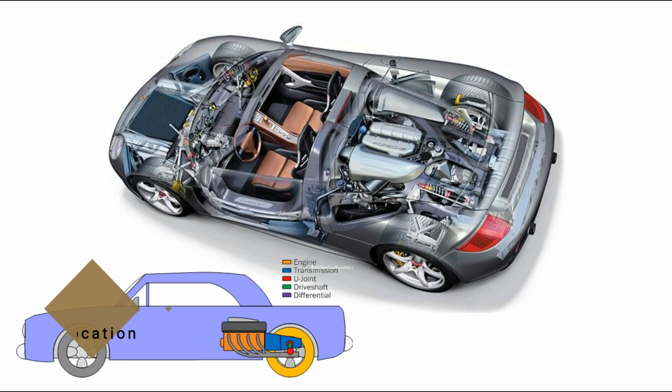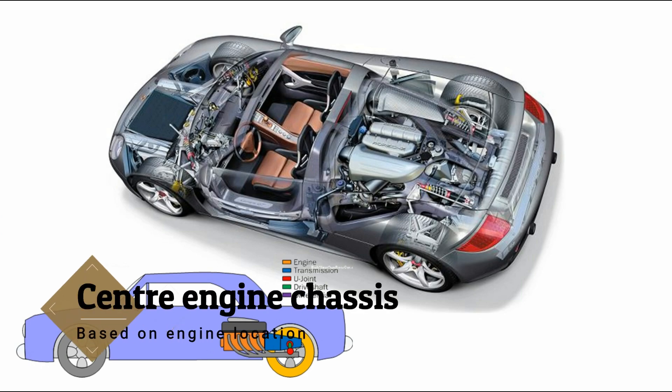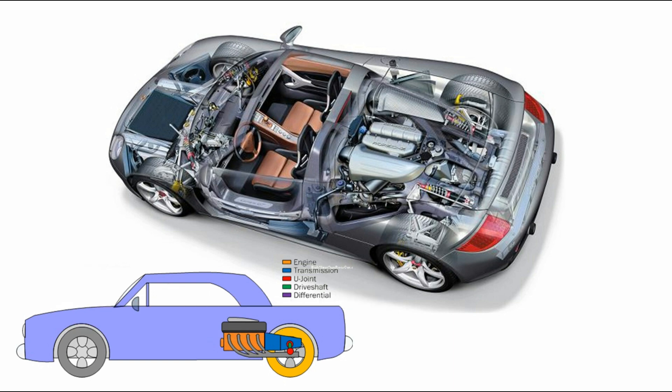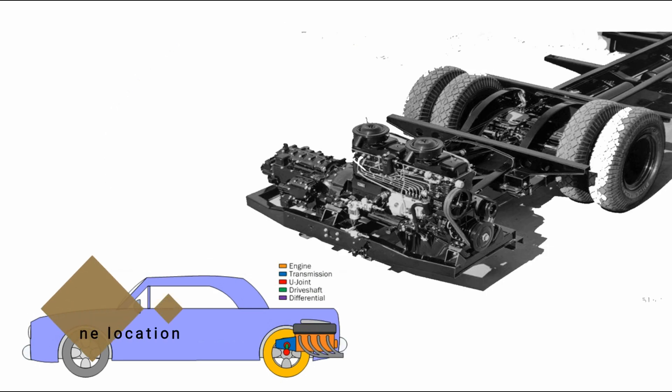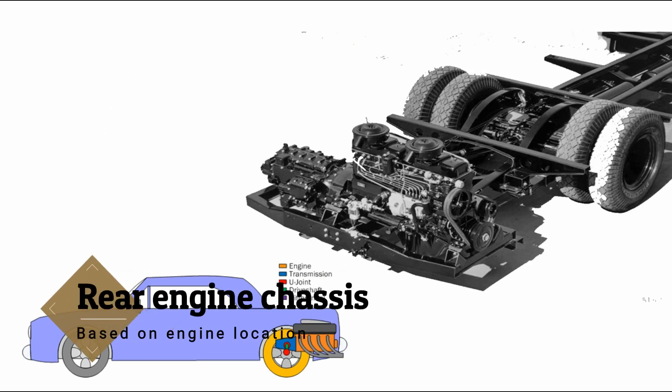Center engine chassis, or mid-engine chassis: in this type, the engine is mounted in between the front wheels and rear wheels. Since the weight of the car shifts under acceleration, this arrangement further improves wheel grip, and the car body can be designed with greater aerodynamic efficiency.